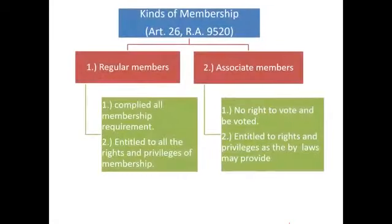Now let us move to membership. Under Article 26 of RA 9520, members can be regular or associate. A regular member has complied with all membership requirements and is entitled to all rights and privileges of membership. An associate member has not complied with all requirements for membership and has no right to vote and no right to be voted upon.